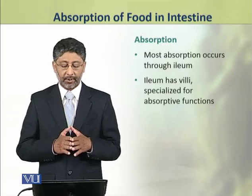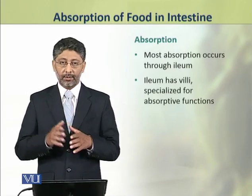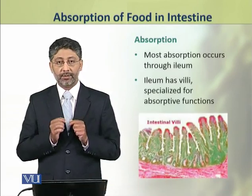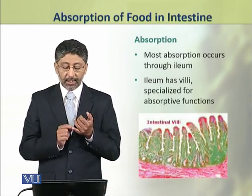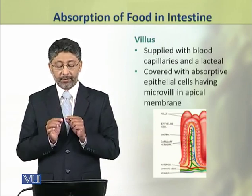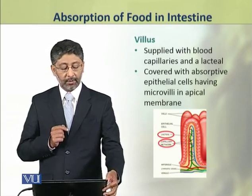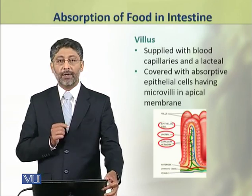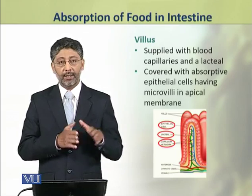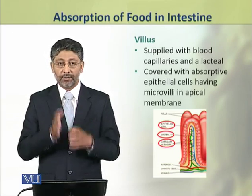Most of the absorption occurs through the ileum of the small intestine. The ileum has specific specialized structures called villi, which are specialized for absorptive functions. Each villus is supplied with blood capillaries and a lacteal, and is covered with absorptive epithelial cells. These epithelial cells have microvilli in their apical membrane, making villi the best absorptive structures in the ileum.